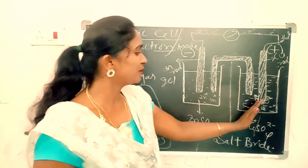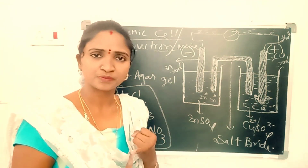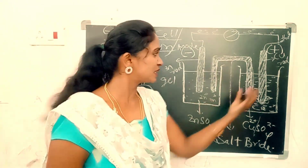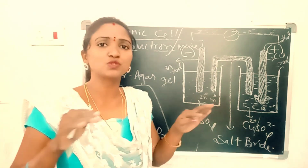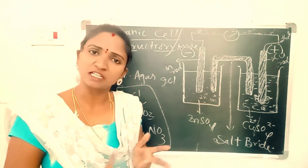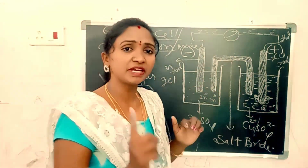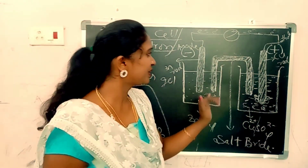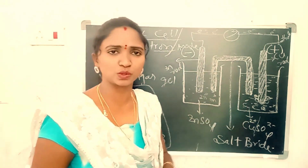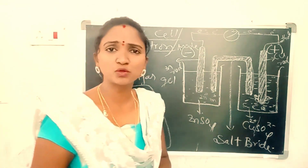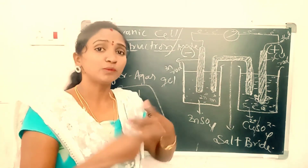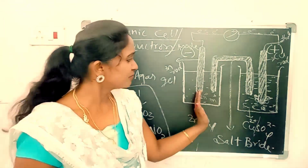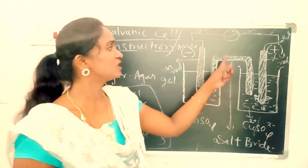The salt bridge prevents accumulation of charges and maintains electrical neutrality. Cl⁻ ions neutralize the Zn²⁺ accumulation, and K⁺ ions neutralize the electron crowd. The salt bridge also prevents physical mixing of both solutions — zinc sulfate and copper sulfate remain separate.